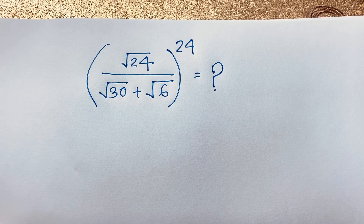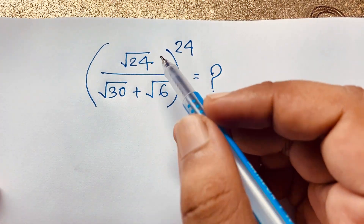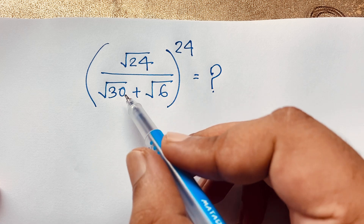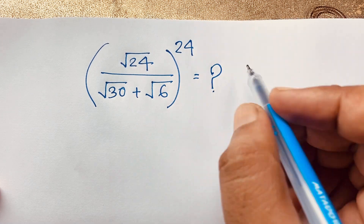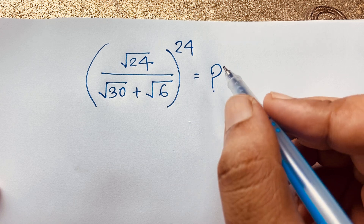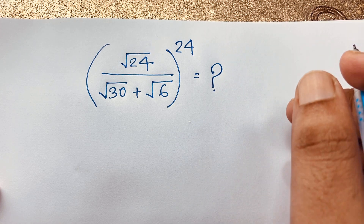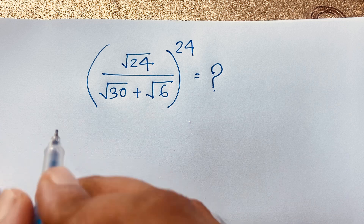Hello everyone, welcome to Rasha's classroom. Today we have solved an interesting math Olympiad question. It is a long math Olympiad question: (√24 / (√30 + √6))^24 is equal to what? How to simplify this math question for a competitive exam? How to solve this interesting math problem?